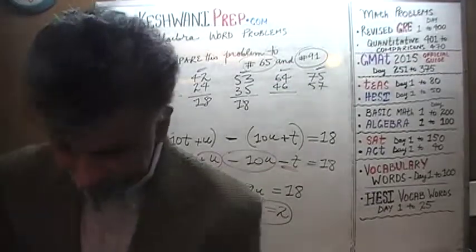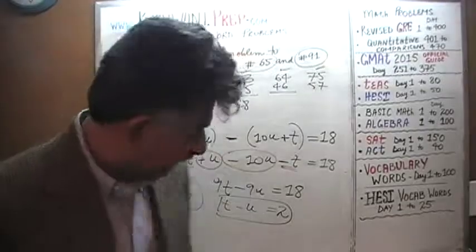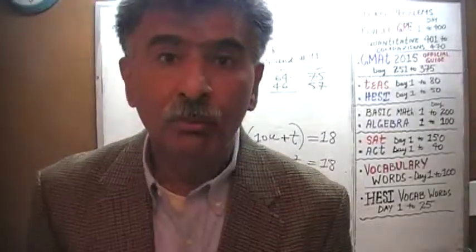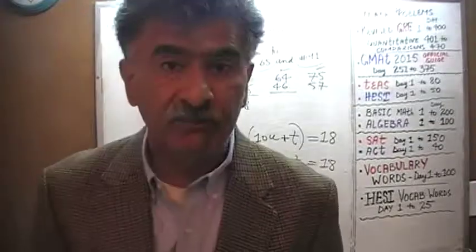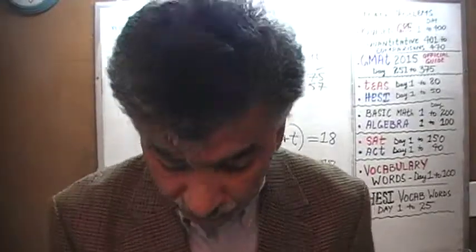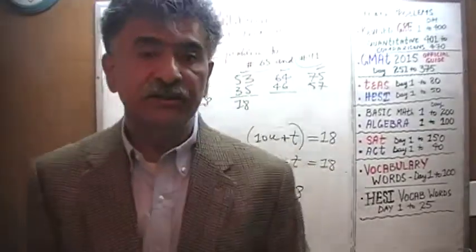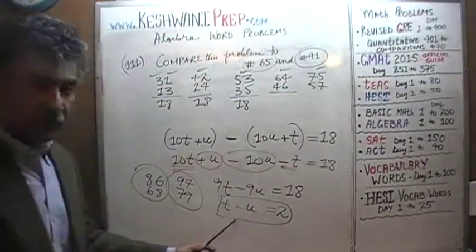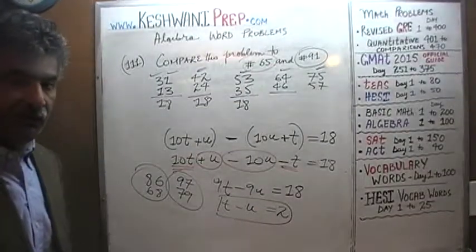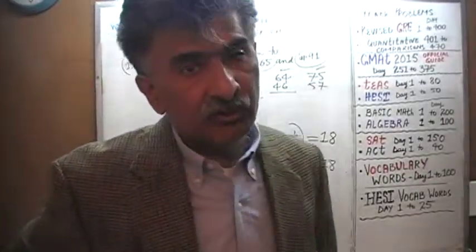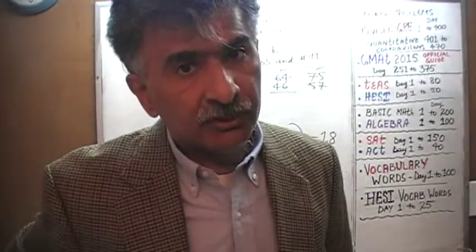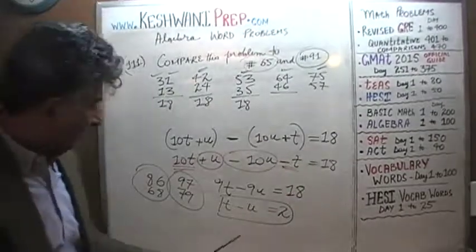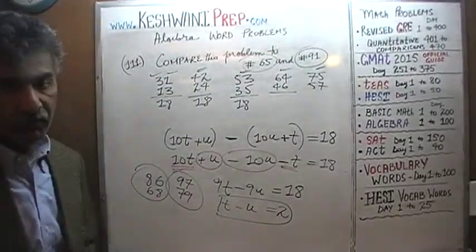Those are the possible scenarios. But nobody was asking us to enumerate all of them. They were simply looking for the difference of the 2 digits, and the answer is 2. The digits differ by 2 in any situation where reversing the digits of a two-digit number produces a difference of 18. Bye now.